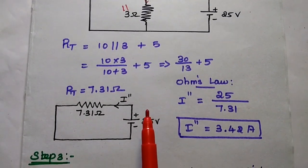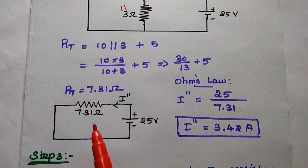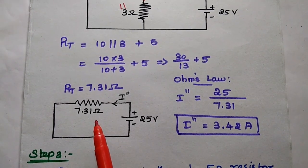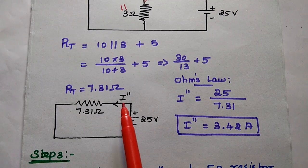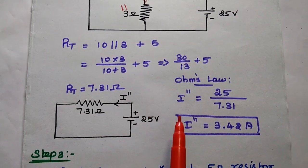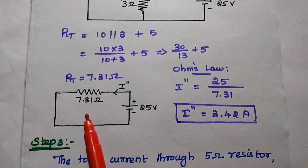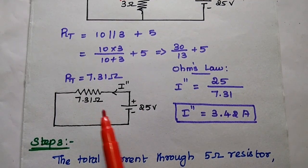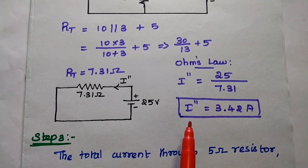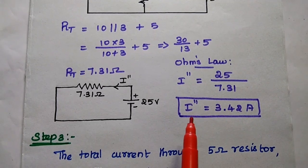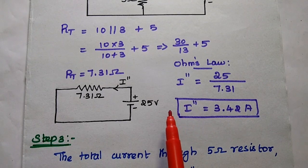This circuit can be drawn as 25 volt in series with 7.31 ohm, with the current direction towards this direction. According to Ohm's law, I double dash is equal to voltage by the resistance value. So 25 divided by 7.31 gives I double dash equal to 3.42 ampere.